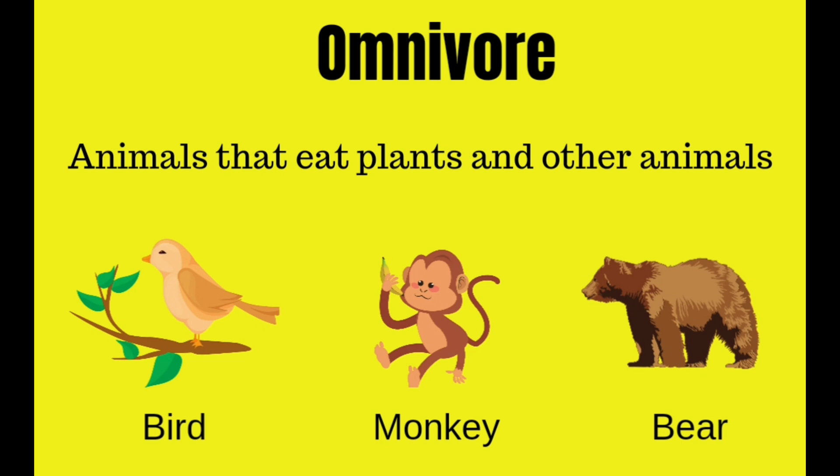Omnivores are animals that eat plants and other animals, such as bird, monkey, and bear.